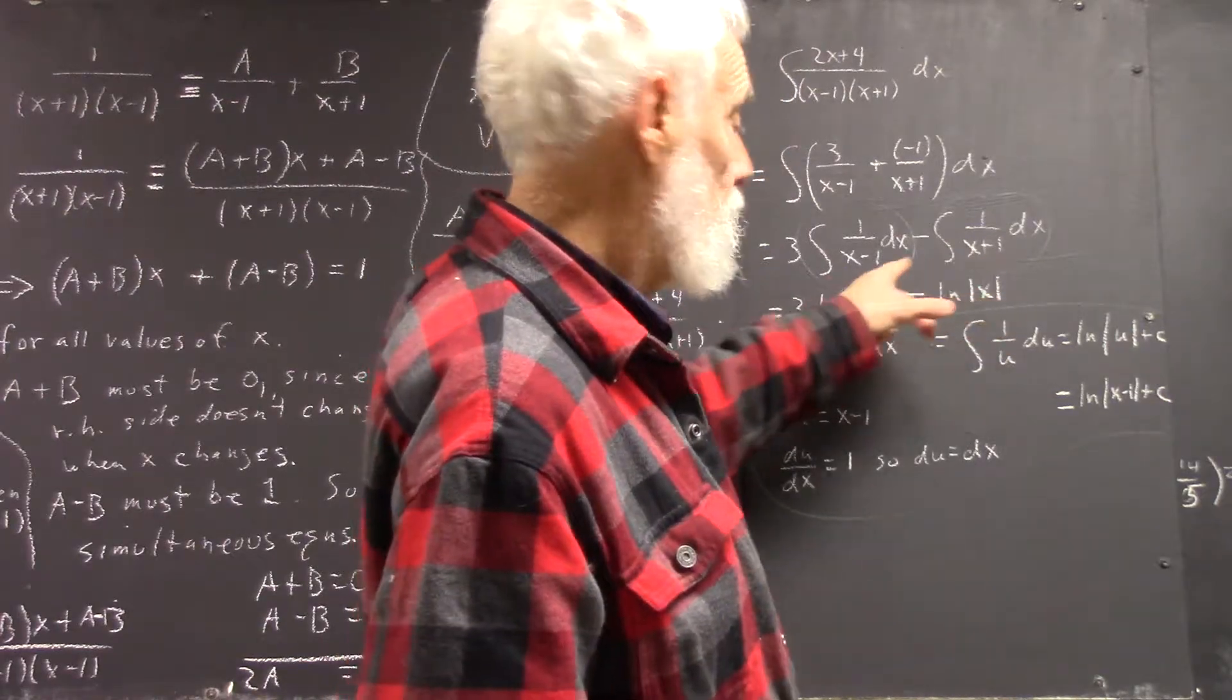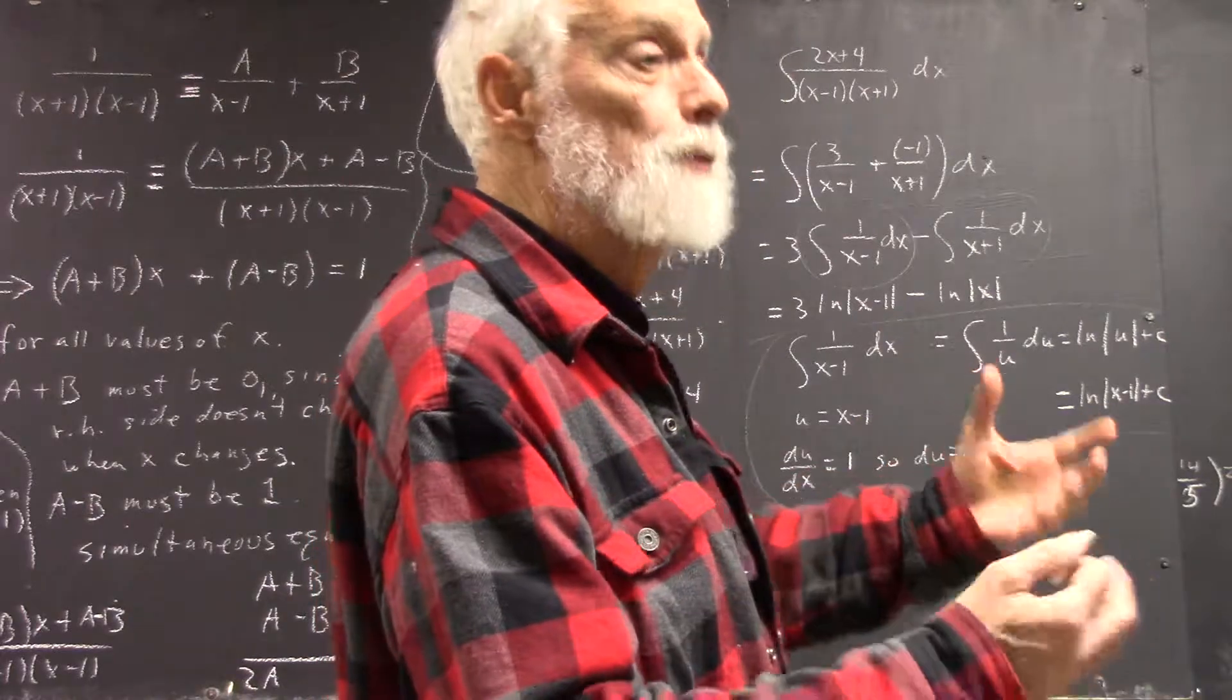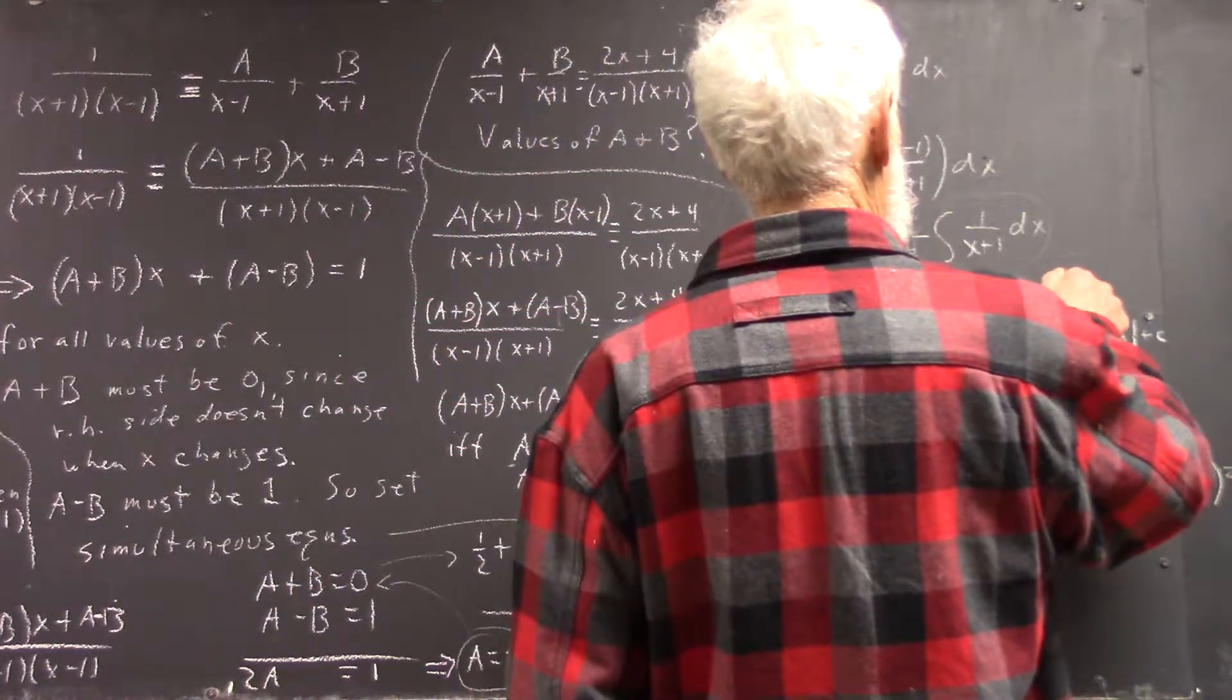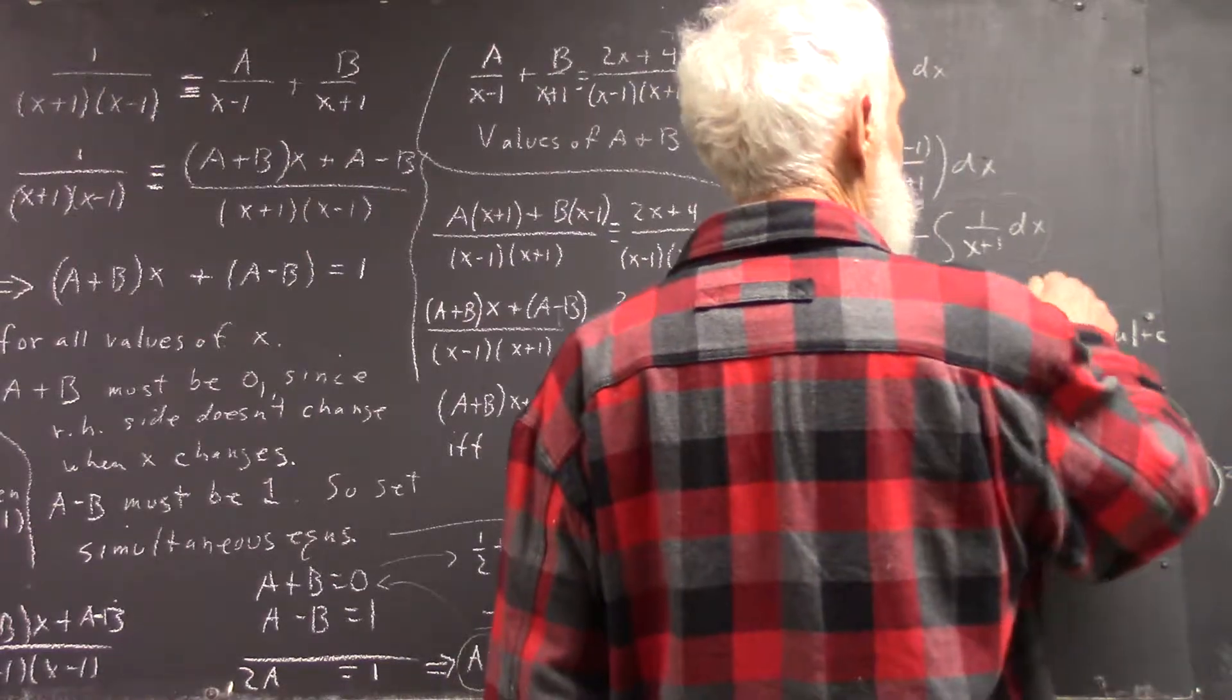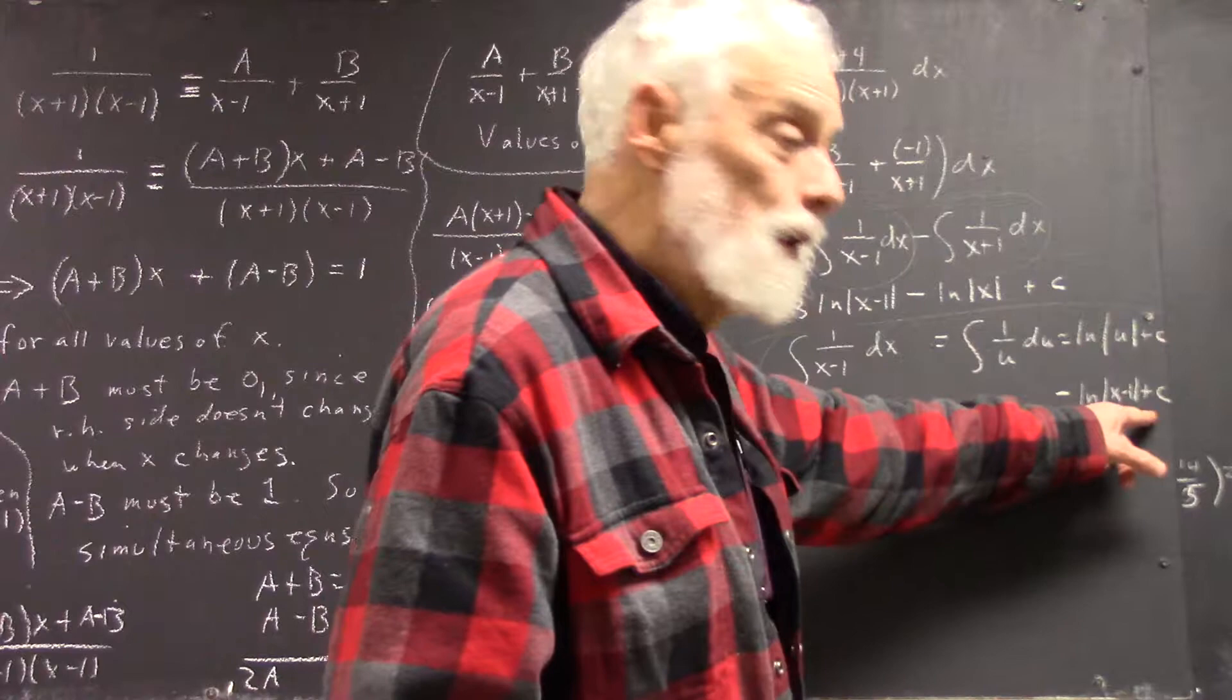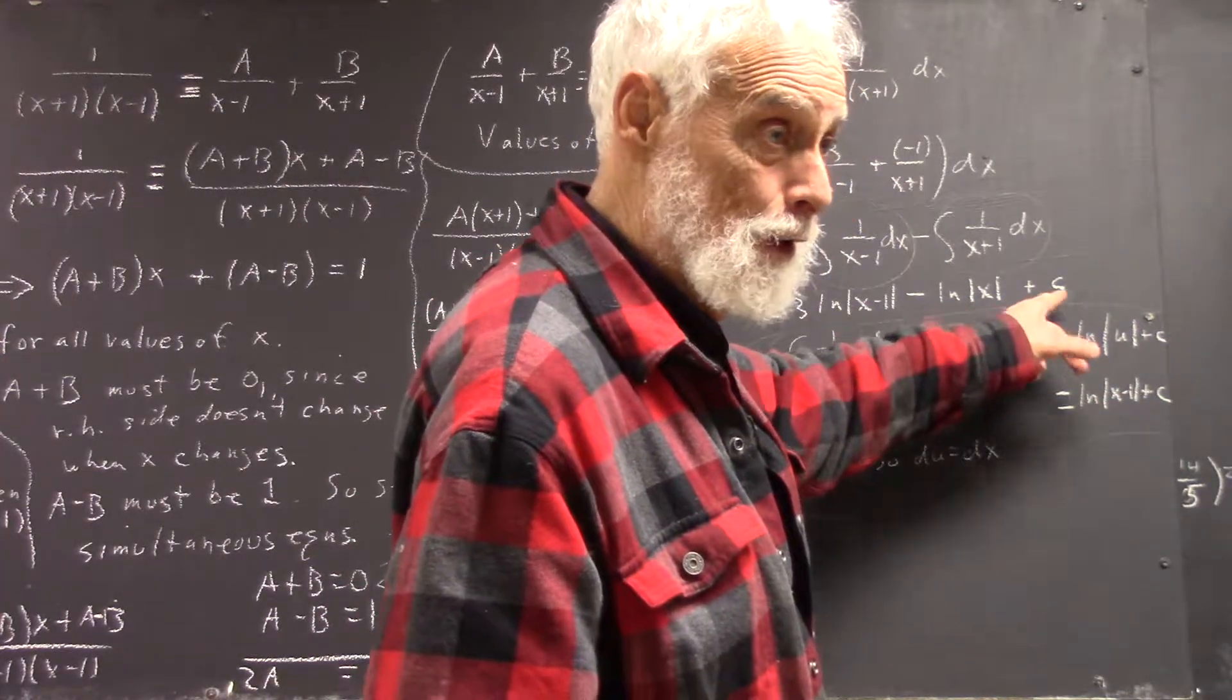If you subtract this constant from this one, you're still going to get a constant. We say one constant absorbs the other. So we just have to write one constant, not necessarily the same as this c, but since this c could be anything at all, well, this c can be anything at all.